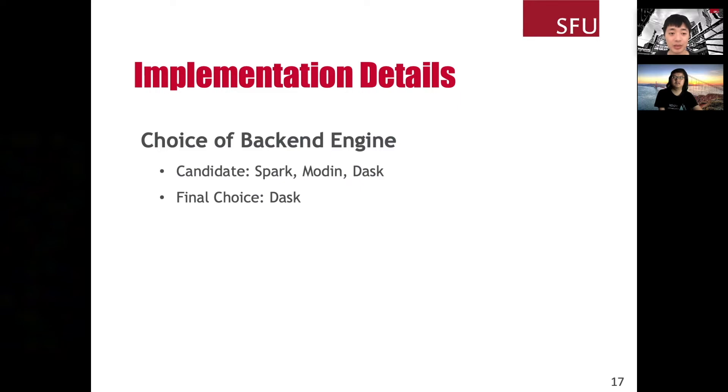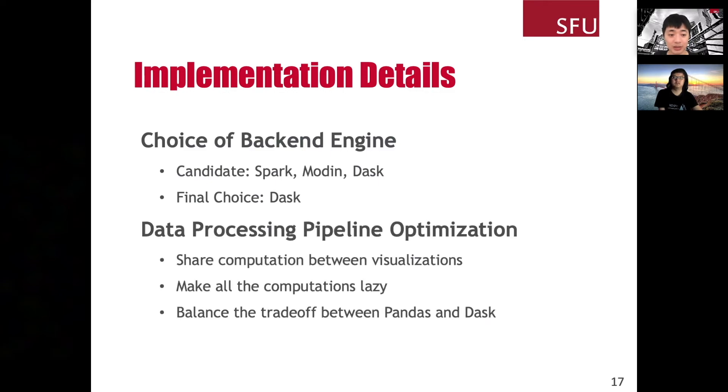The compute module is one of the key components of our library. We considered multiple choices dating back to the beginning of this project. For example, Spark, Modin, and Dask. Finally, we chose Dask because first, it is lightweight and fast in a single node environment. Second, it can scale to a distributed environment. And third, it can optimize the computation required for multiple visualizations using lazy computation. Based on the property of Dask, we did optimizations like making computations shared between visualizations, as well as making all the computations lazy. We also found that Dask can introduce overheads on tiny data. For example, it is not worth it to use Dask to do computations inside the render module, because the data there is usually small. In this case, we used Pandas to do computation.